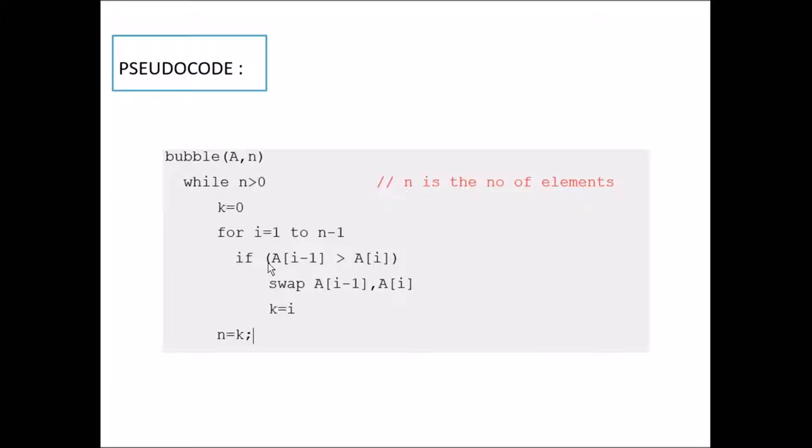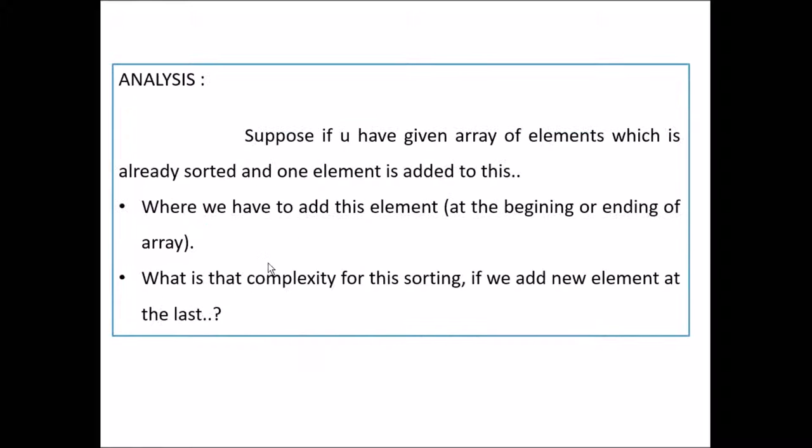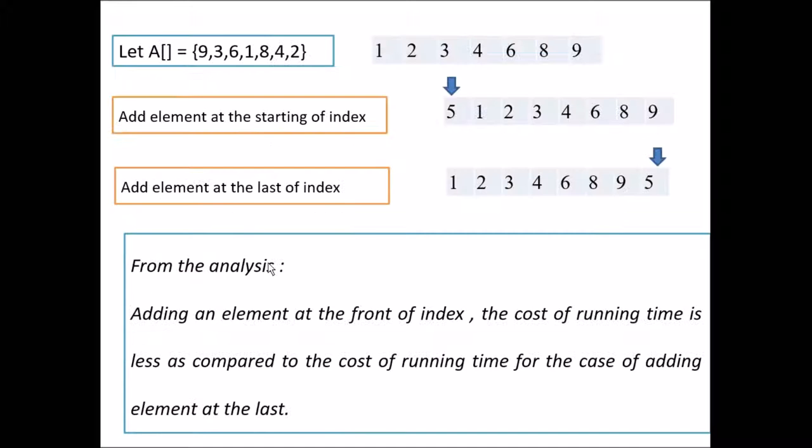If we give the sorted array to the quick sort, then it will take big O of n log n even for the best case also. So this is one advantage over quick sort for bubble sorting. Suppose if you have given array of elements which is already sorted and one element is added to this. Now to get the best case of this sorting algorithm, where we have to add this element, that is at the beginning or ending of the array. And what is the complexity if we add at the beginning and if we add at the ending. So now let's take a look into this.